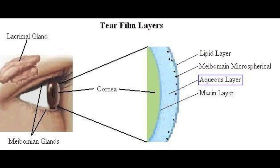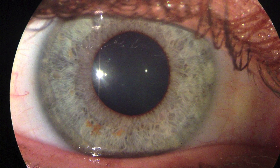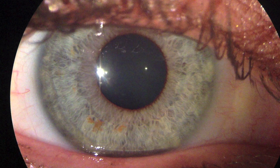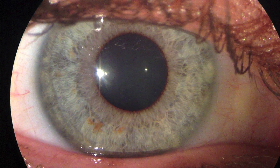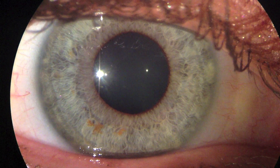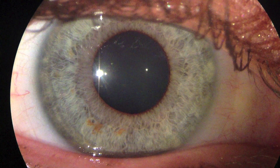The middle layer of the tear film is called the aqueous layer or the watery layer and makes up a large portion of the tear film by volume. This layer is produced by the lacrimal glands, which are located above the eye and towards the temples. The lacrimal glands also produce some of the proteins located in the tear film. According to some studies, a majority of the aqueous layer and the tear film as a whole is located in the meniscus, or prism as it is sometimes called, due to its ability to refract light.